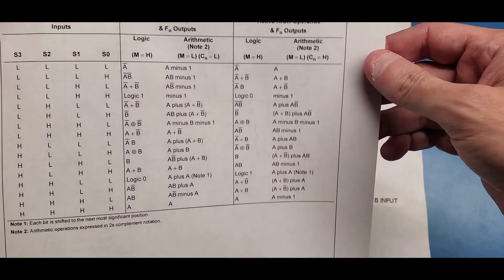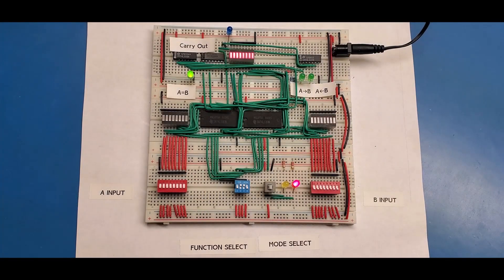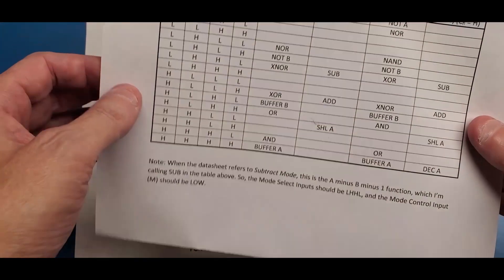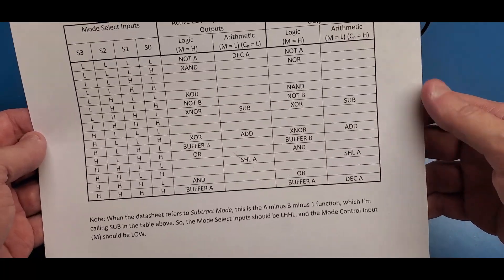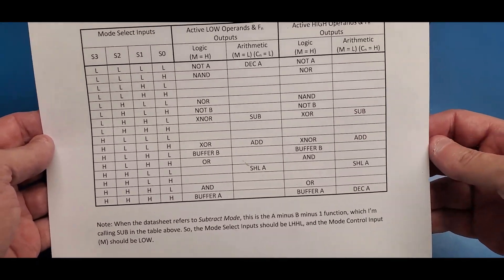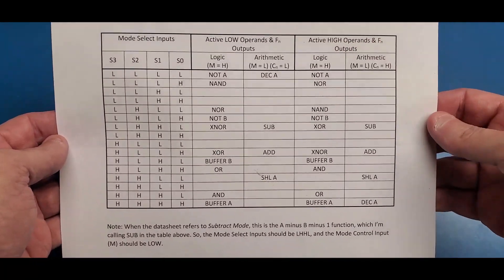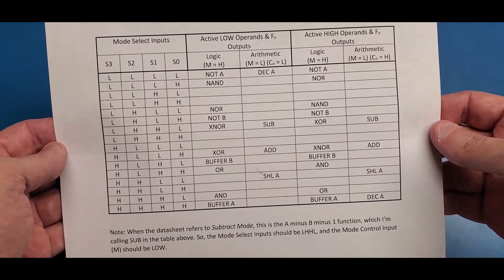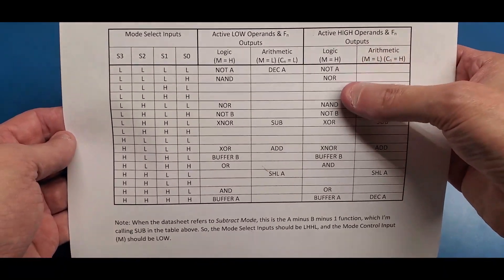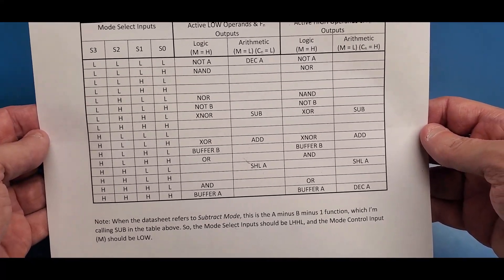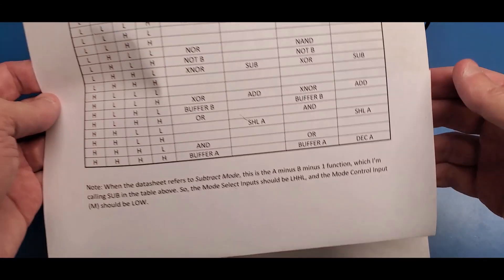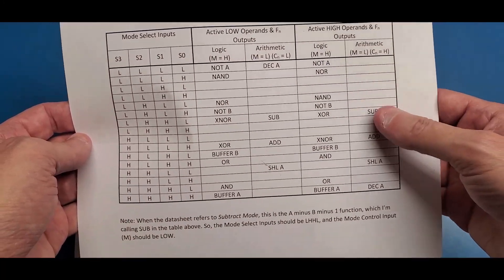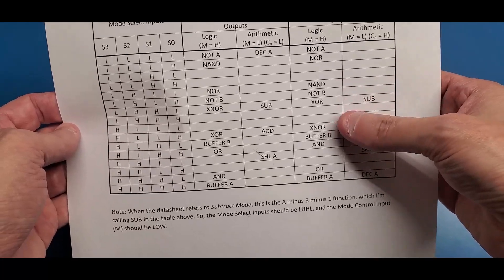One of the things I've done is gone through and made up my own sheet using functions that actually seem like they would serve a purpose. Instead of using Boolean algebra notation like 'a' with a line over it indicating NOT a, I've reworded a lot of these so they'd make more sense — maybe for putting this inside a breadboard computer or using these chips as the basis of an ALU. So we have functions like NOT a, NOR, NAND, NOT b, and so on.